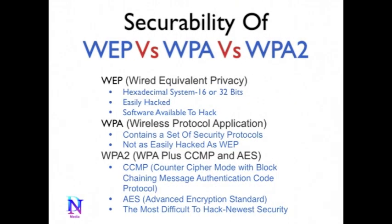Let's take a look at the differences between WEP versus WPA and WPA2. WEP means Wired Equivalent Privacy. It was the first type of security code necessary to gain access to a local area network. The passwords are assigned using a 16 or 32-bit hexadecimal numbering system. The problem with WEP is that it's easily hacked and that there's also software available online to help people hack into their own systems.